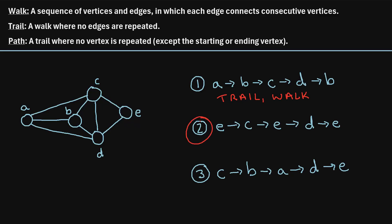Now let's consider the second sequence: we start at vertex E, go to C, go back to E, then go to D, then back to E. For this sequence, we visited two edges more than once, and we visited vertex E multiple times. So this one only meets the requirement for a walk — it doesn't meet the requirements for a trail or a path. So we'll say walk for this one.